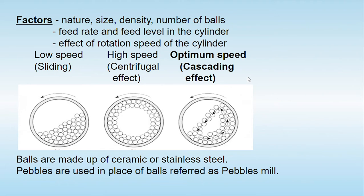The cylinder should be operated at an optimum speed. At optimum speed, the balls will climb up to a particular height and then slide down — this effect is known as the cascading effect. This cascading effect gives us proper size reduction. Generally, the balls are made up of ceramic or stainless steel.